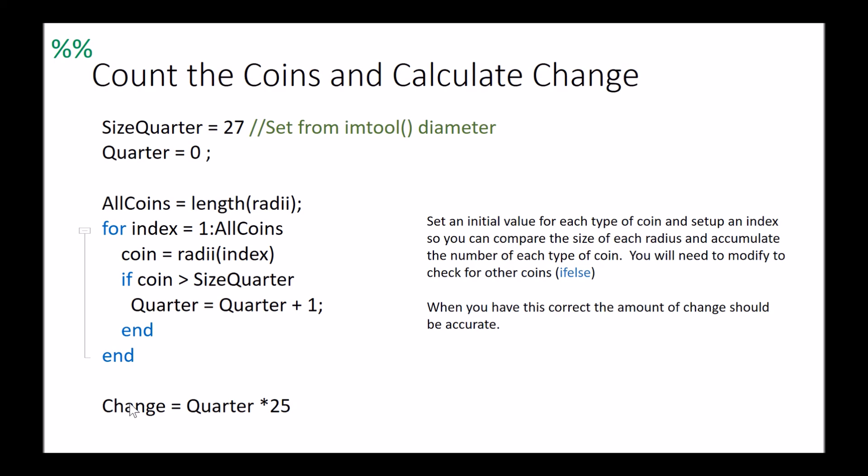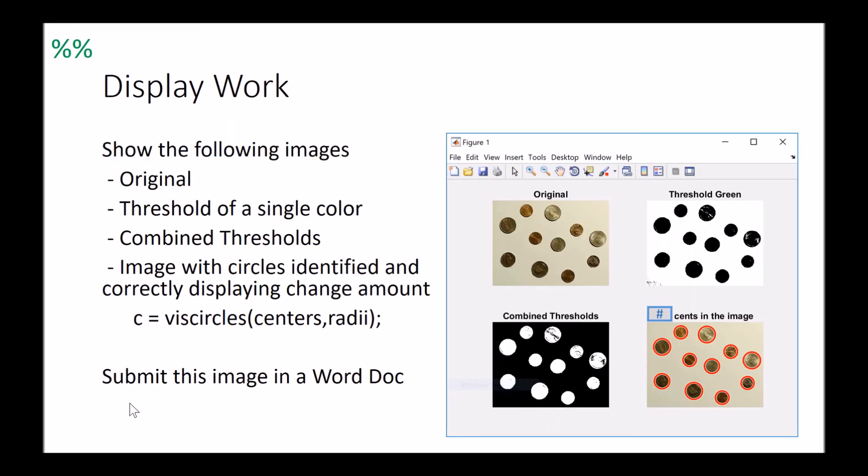That last part was kind of complex, so I'm going to start a new section right after it. This is where we're going to display our work. We're going to do a similar plot that we did earlier with the different thresholds. We want it to be our original image, the threshold of our color, our combined thresholds, and then our original image with the radii over top of it. I also want you to plop in the cent value there.